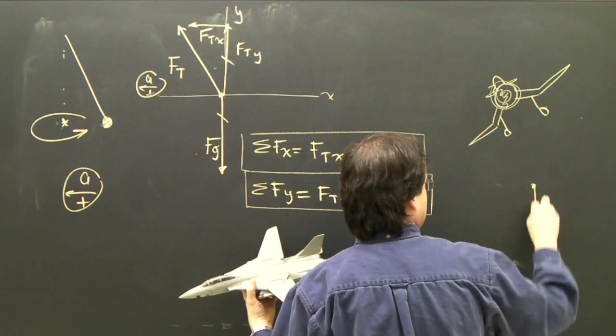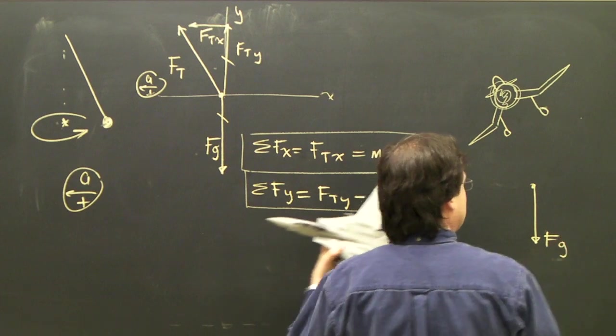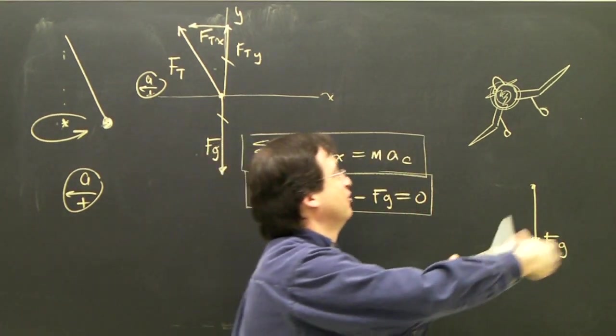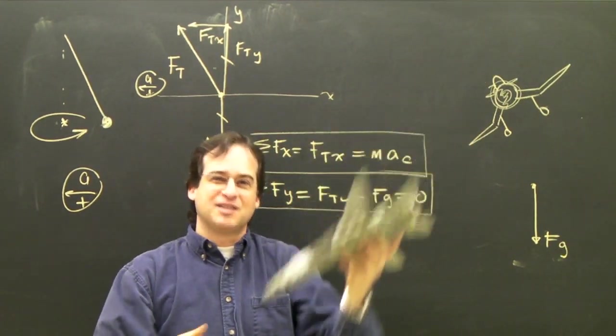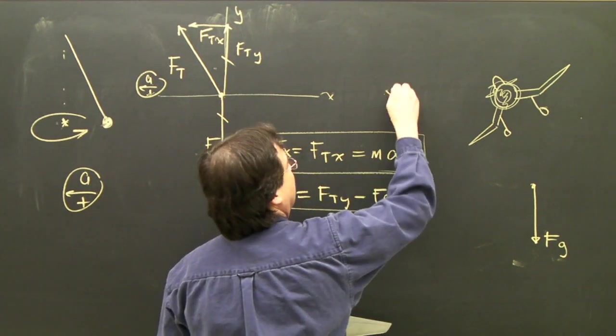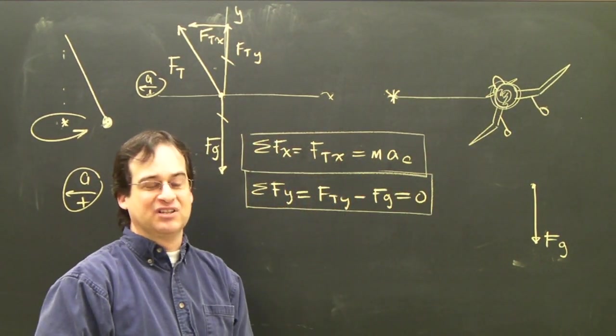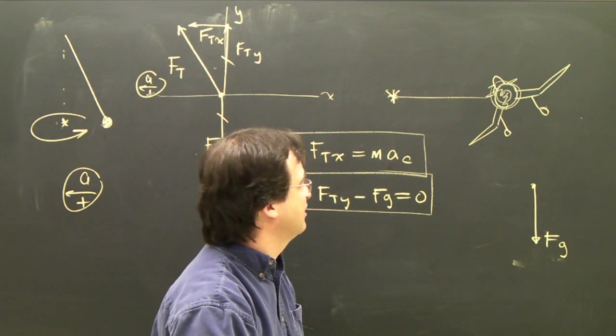And you can see the way it works is, if I draw a free-body diagram, there's gravity. But the airplane, in order to turn this way, needs some force towards the center over here, if it's going to turn, because it needs centripetal force. How does it get that? The airplane has lift.